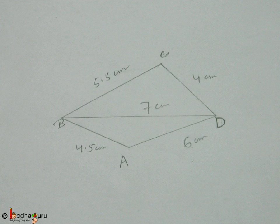And the rest of the sides are AB is equal to 4.5 centimeter, BC equal to 5.5 centimeter, CD equal to 4 centimeter, and DA is equal to 6 centimeter. First we need to make a rough sketch to get an idea what we are going to do.